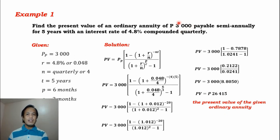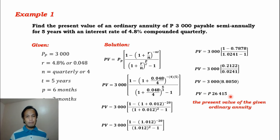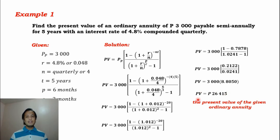So 26,415 pesos is the present value of the given ordinary annuity, where 3,000 is paid semi-annually. I would like to clarify that there may be a slight difference in the final answer if we do not round off to four decimal places. But the concept is the same — unless the difference is significantly large.